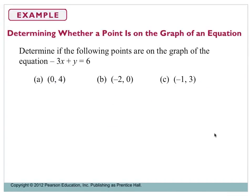Let's determine whether a point is on the graph of an equation. Given the equation -3x + y = 6 and three coordinates, all you have to do is plug them in one by one. If the result makes sense (both sides are equal), then the point is on the graph. If it doesn't make sense, the point is not on the graph.